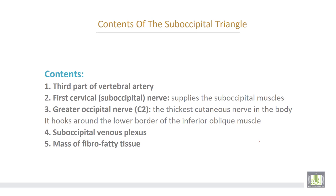The contents of the suboccipital triangle: number one, the third part of the vertebral artery just before entering the cranial cavity. Number two, the first cervical or suboccipital nerve, which supplies the suboccipital muscles. Number three, the greater occipital nerve from C2 — it is the thickest cutaneous nerve in the body and hooks around the lower border of the inferior oblique muscle. Number four, the suboccipital venous plexus. Number five, a mass of fibrofatty tissue.